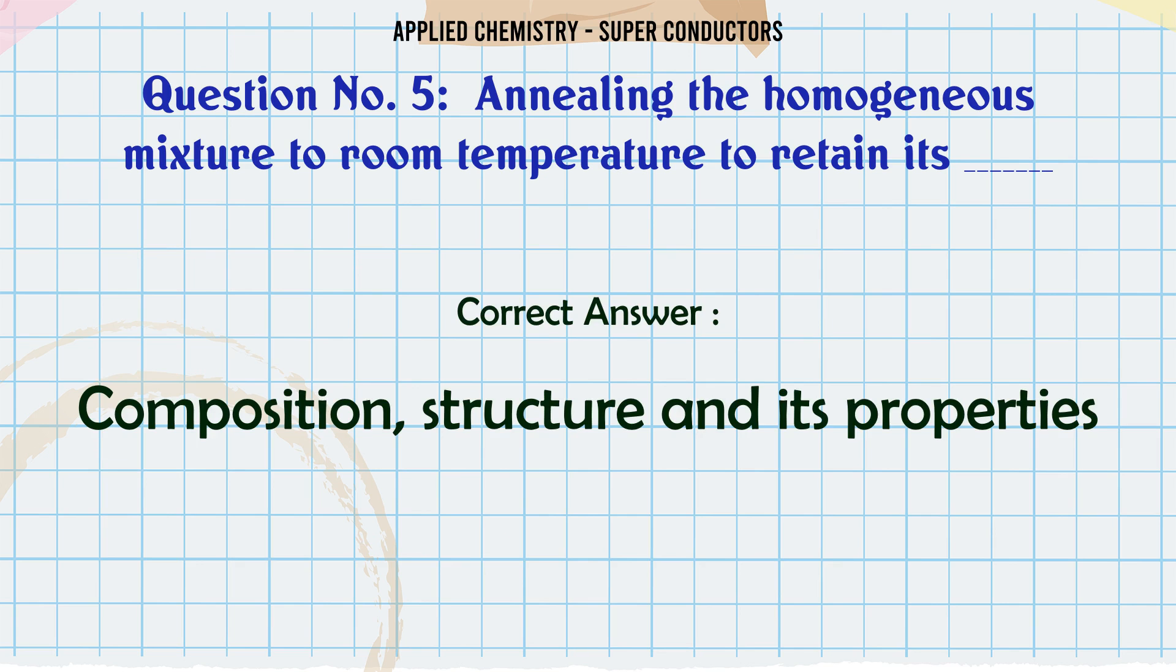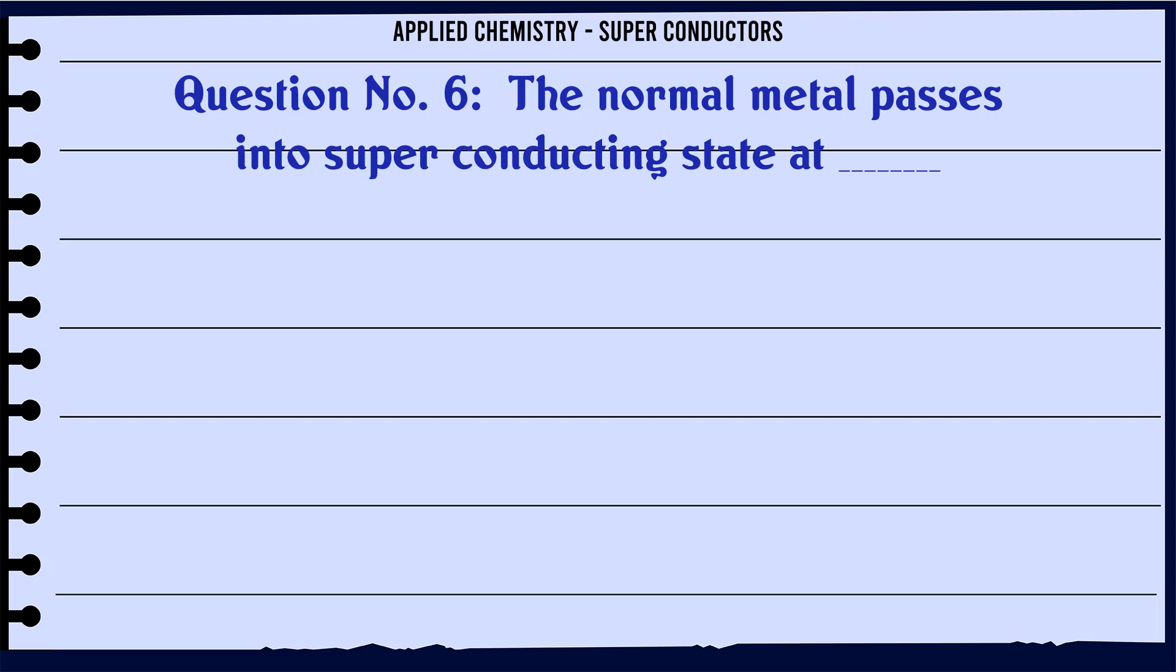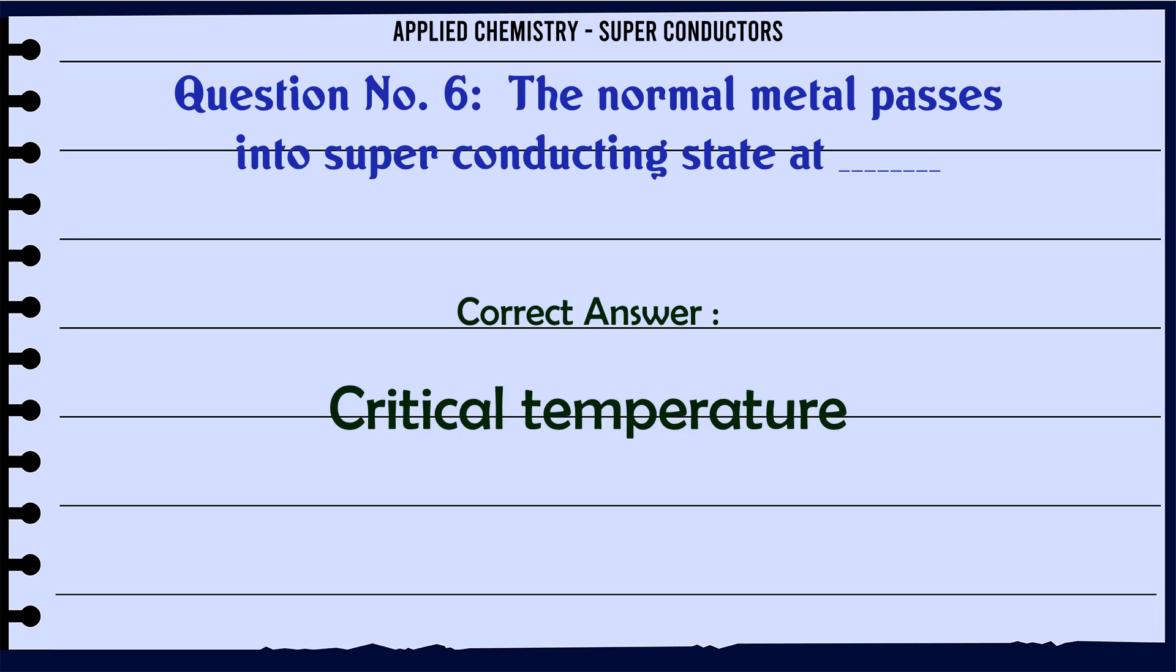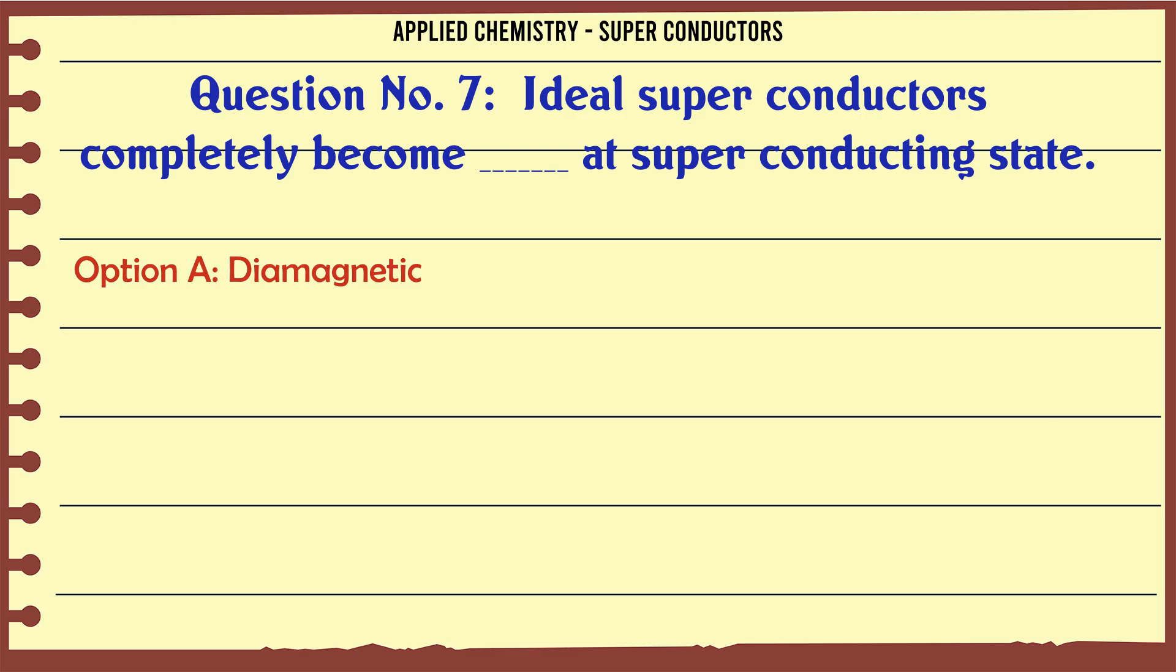The normal metal passes into superconducting state at: A high temperature, B low temperature, C critical temperature, D no temperature. The correct answer is critical temperature.